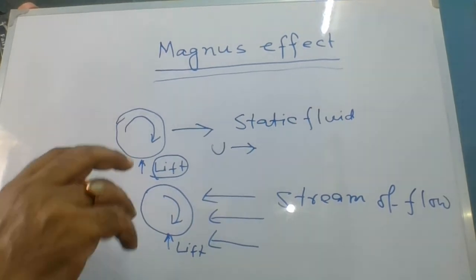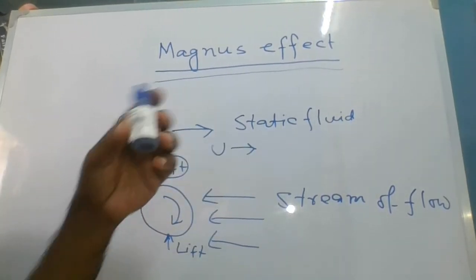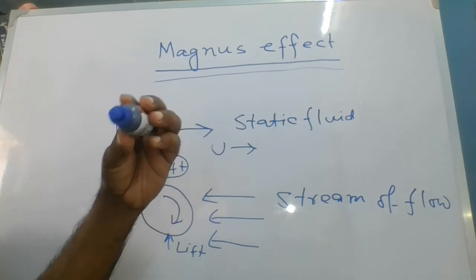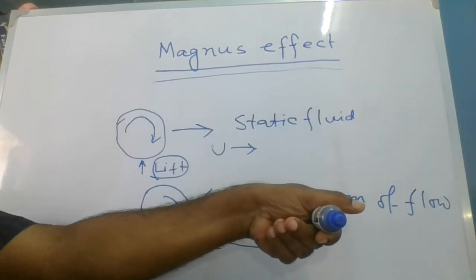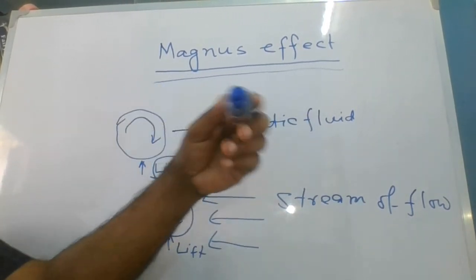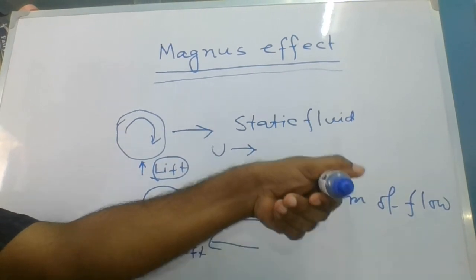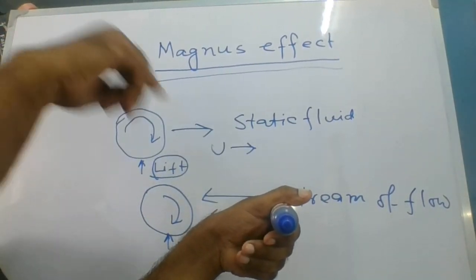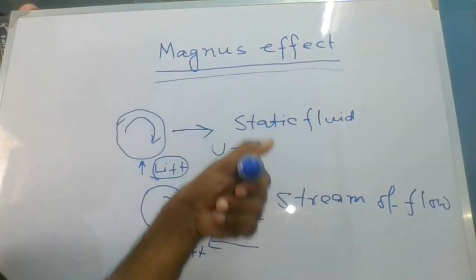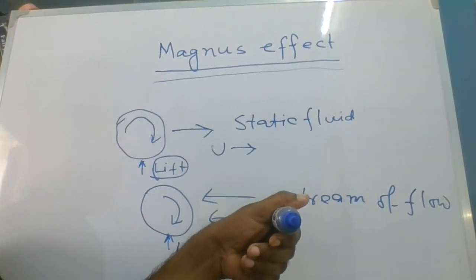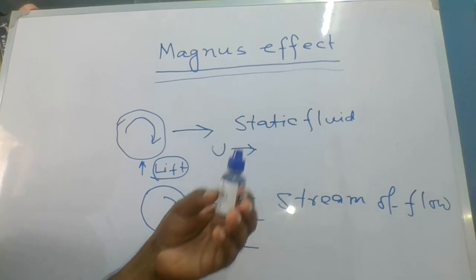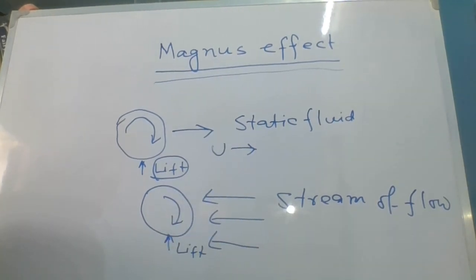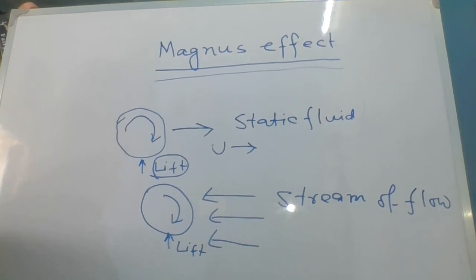Example 2: In cricket, when a bowler bowls a spin ball, once the ball is spinning in this fashion, one force is created by Magnus effect by which it dips downward very quickly. These are all examples of Magnus effect. Thank you.